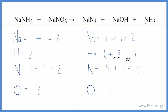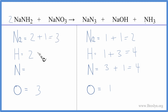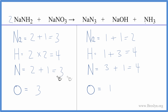Let's balance the hydrogens — we could just put a two in front of the sodium amide. Now we need to update the sodiums, nitrogens, and hydrogens. For sodium: one times two plus the one here gives us three. Hydrogen: two times two gives us four. Nitrogen: one times two plus the one right here gives us three.